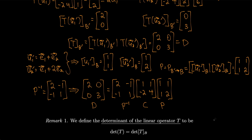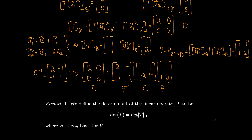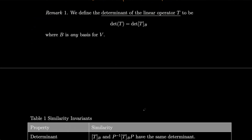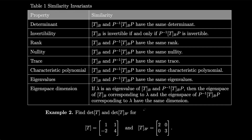We define the determinant of a linear operator T to be the determinant of T_B, where B is any basis for V — it doesn't matter which basis. We have an entire table of similarity invariants: determinant doesn't change, invertibility doesn't change, rank doesn't change, nullity doesn't change, trace doesn't change, characteristic polynomial doesn't change, eigenvalues don't change, and eigenspace dimension doesn't change when passing between similar matrices.